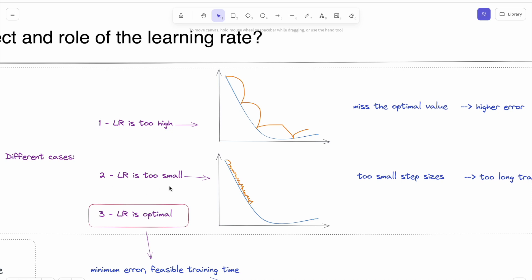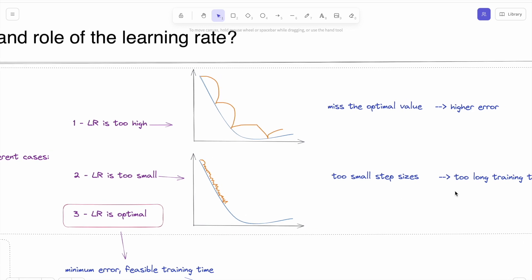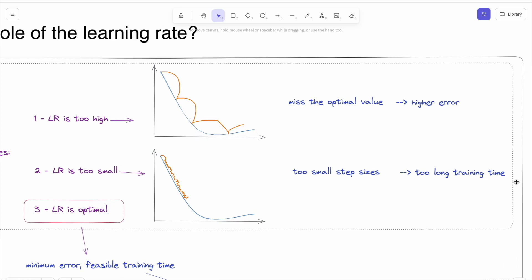If the learning rate is too small, then step sizes will be too small, and from the starting point to the global point, these small step sizes will cause too long training time. This is also bad for us.